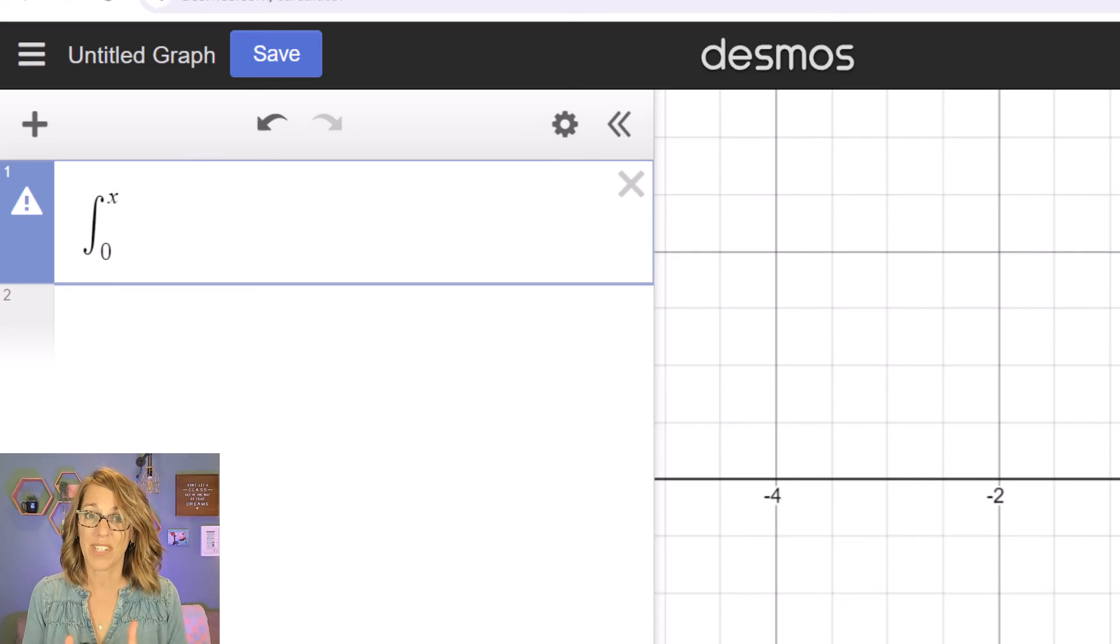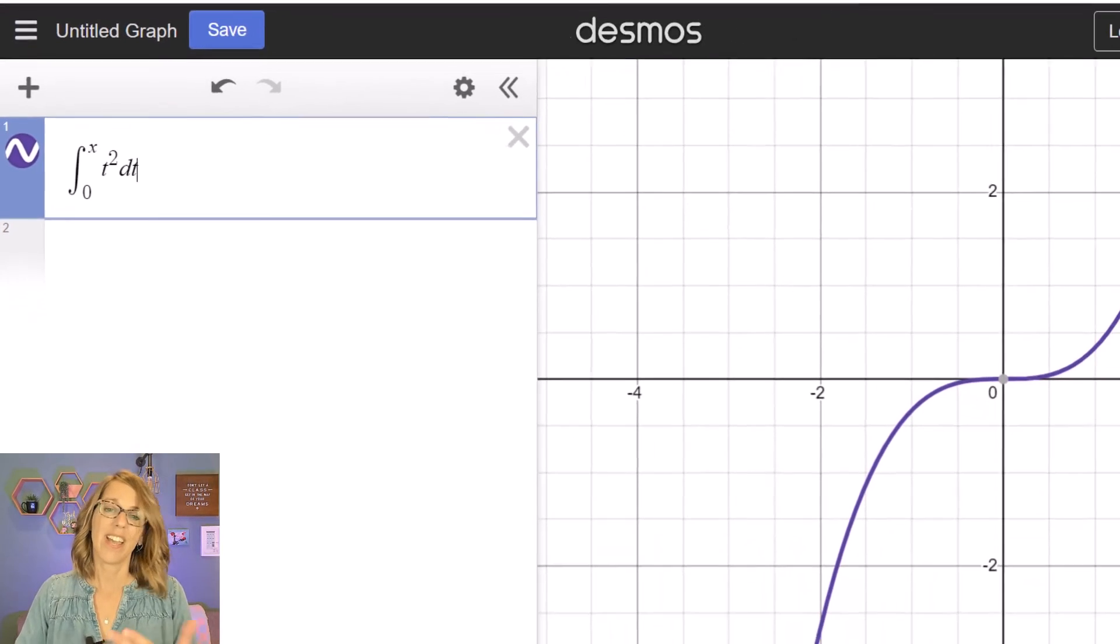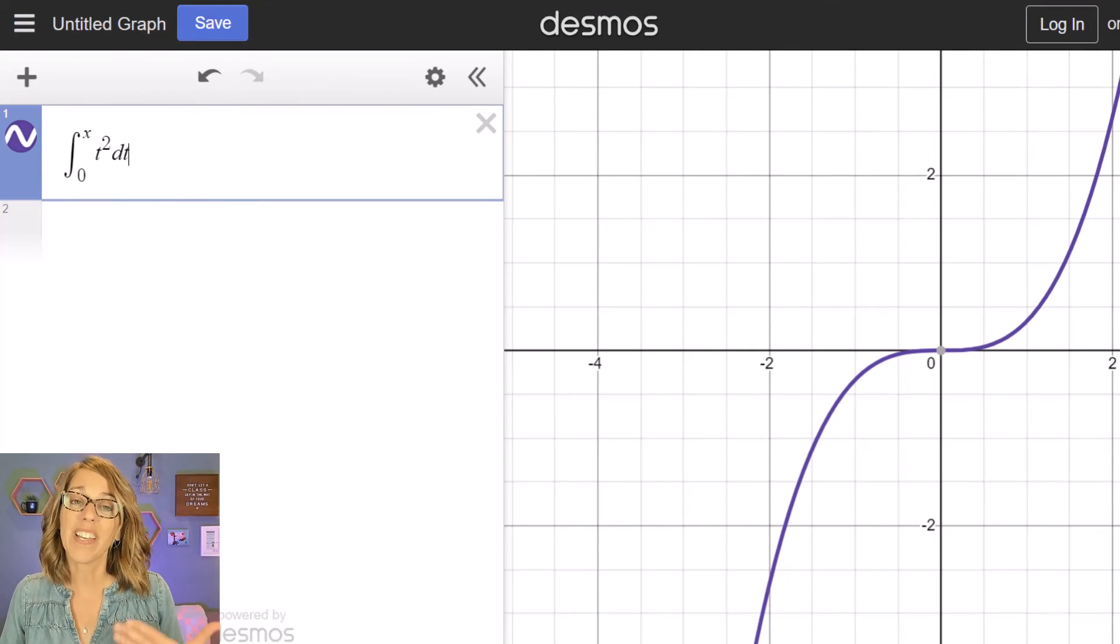Here's where that dummy variable comes into play. Let's say that I want the anti-derivative of x squared, but I'm going to put in t squared, and then I want dt. And what is graphed over here for me is the anti-derivative, which would be one third x cubed.